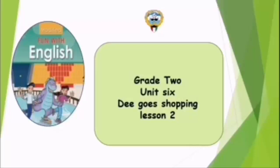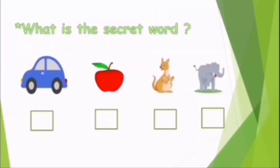What is the secret word? You can see here a car — the word 'car' starts with the letter C. You can see an apple — it starts with the letter A. You can see a kangaroo — it starts with the letter K. And an elephant — it starts with the letter E.